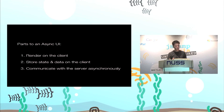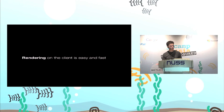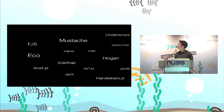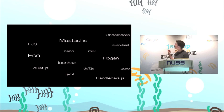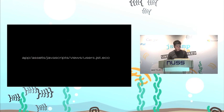The paths to an asynchronous UI: you've got to render on the client, store state and data on the client, and communicate with the server asynchronously. Rendering on the client — that's pretty easy these days. There's a ton of templating libraries; in fact, the hard part is choosing which ones to use. My personal favorite is Eco, but there are other great ones. Look at the syntax and work out which ones are best for you. One major difference worth looking at: some allow you to pre-compile the templates on the server, so your client doesn't have to compile them every single time — which is always a good idea.